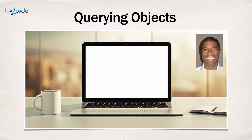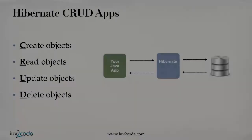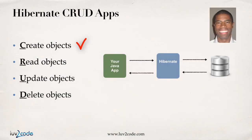In this video, we're going to learn how to query objects using Hibernate. So far in our little checklist, we've done the create objects and we also learned how to read an object based on the primary key. But in this video, we're actually going to learn how to do a query on objects that meet certain conditions.